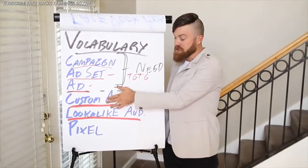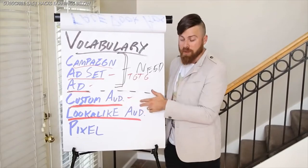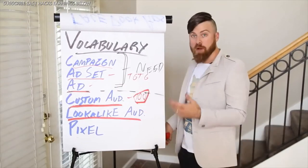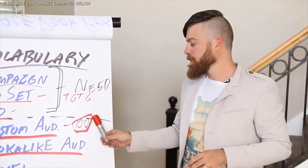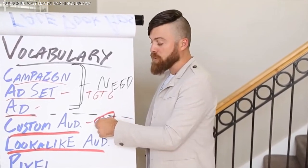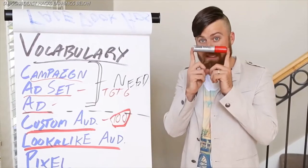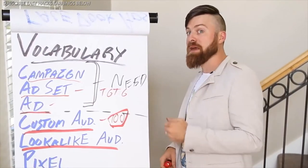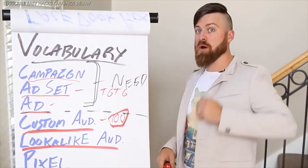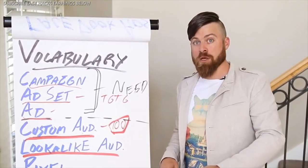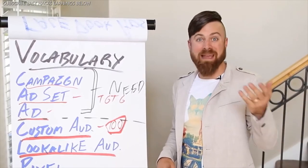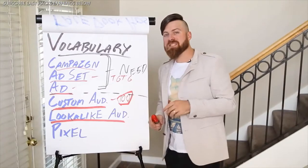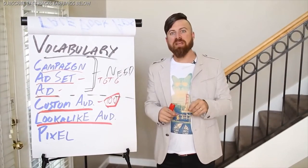Another use for a custom audience is you can upload a list of people who have bought your product. Facebook will automatically match up the people who have already bought the product you're selling with other people that will be interested in buying it through their artificial intelligence algorithms. It works extremely well. What I just described — matching up buyers with new buyers — is called a lookalike audience. You can build lookalike audiences contingent on custom audiences.